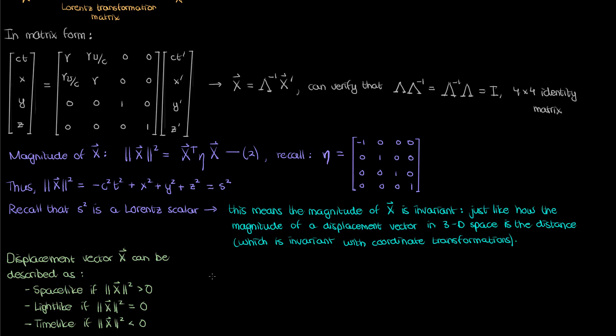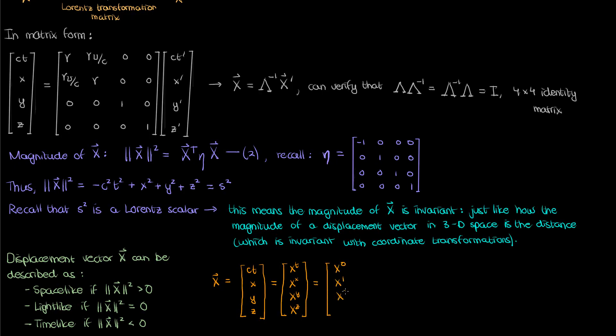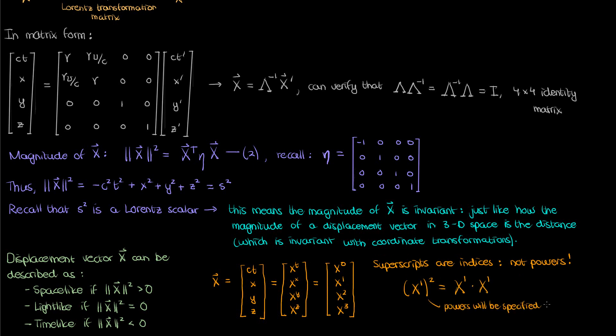Sometimes you might also see that instead of describing my displacement four vector as consisting of the components ct, x, y, and z, you might see those components labeled as capital X superscript t, X superscript x, X superscript y, and X superscript z, or sometimes even with numbers — capital X superscript 0, 1, 2, and 3. These are superscript indices, not powers — they represent an index. If I wanted to represent a power when I've got superscript indices, I would use parentheses with the power outside. For those interested, the reason the components are labeled with a superscript index is that they are contravariant components, but I don't expect you to know that right now because we haven't yet gotten into tensors in relativity.